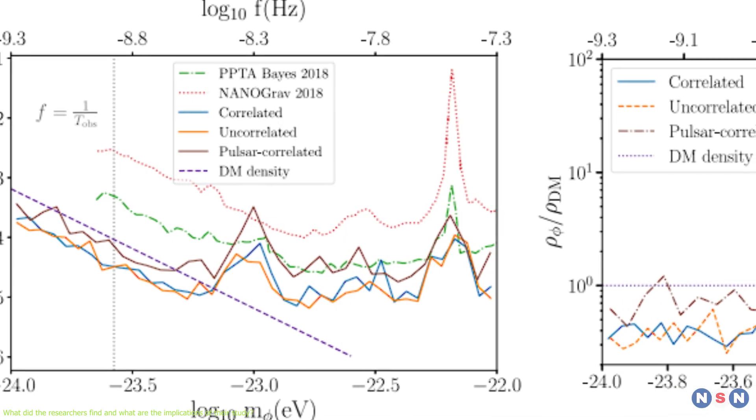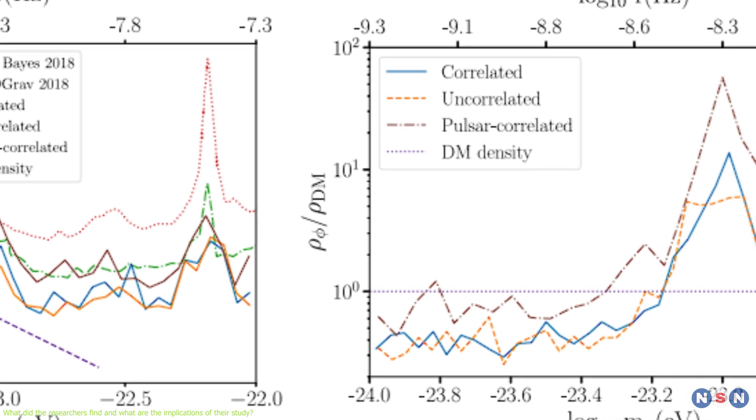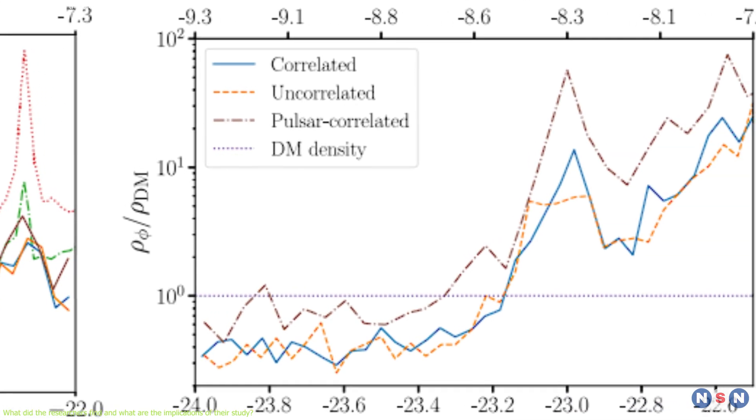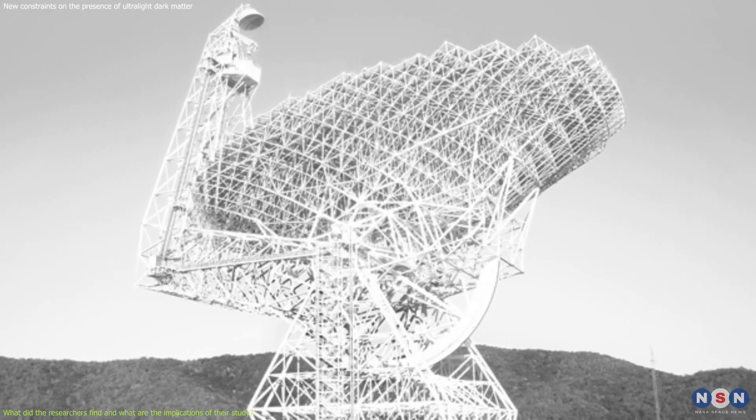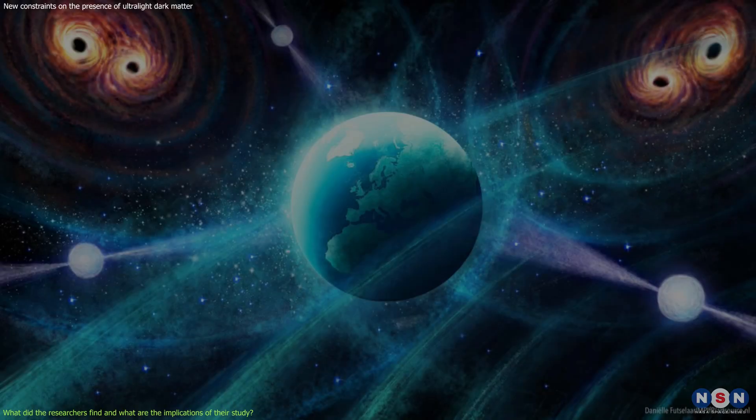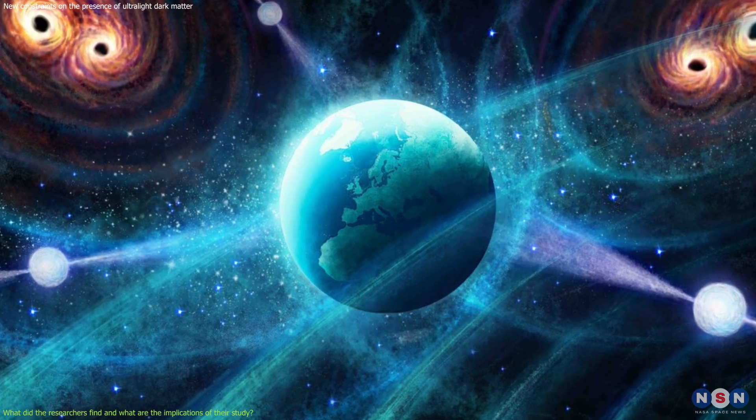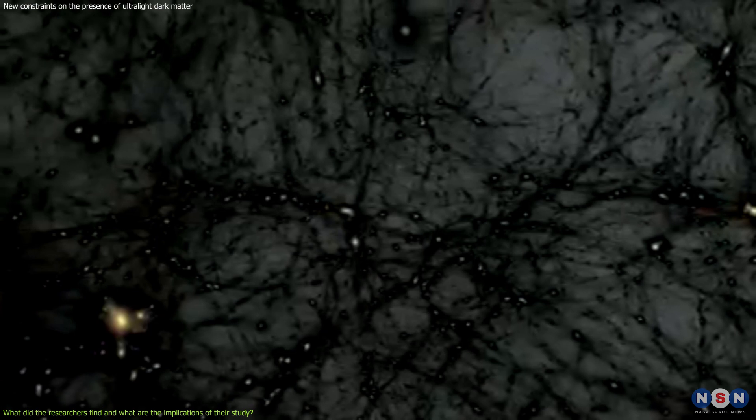Therefore, more data and analysis are needed to confirm or refute the results and to explore other possibilities. The EPTA and other pulsar timing arrays are expected to improve their sensitivity and precision in the future, and to collaborate with each other to form a global pulsar timing array, which could increase the chances of detecting dark matter or other astrophysical phenomena.